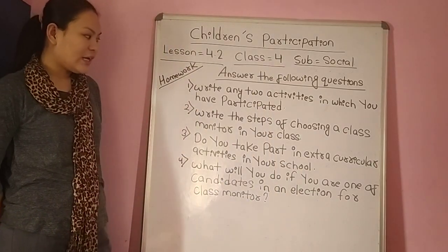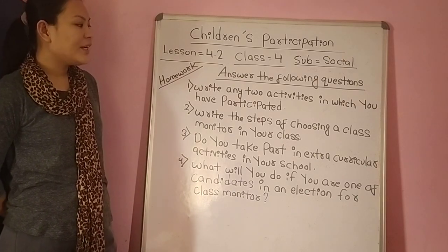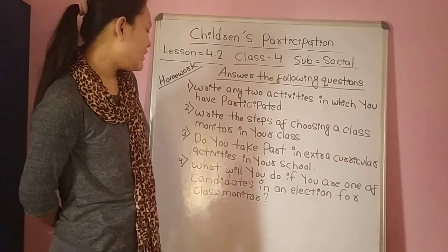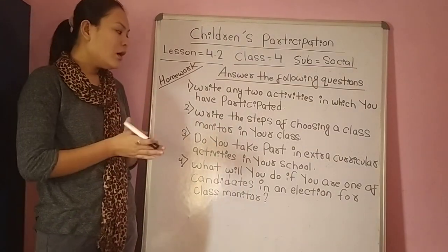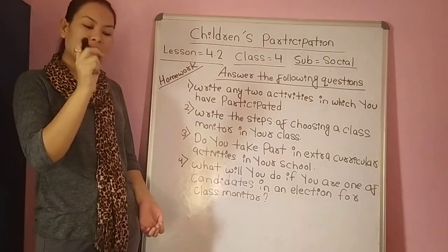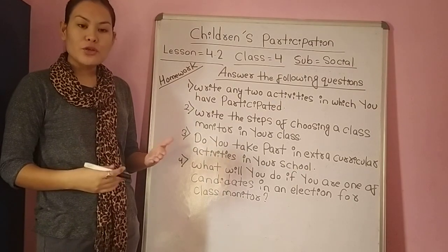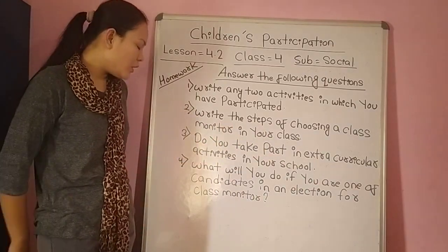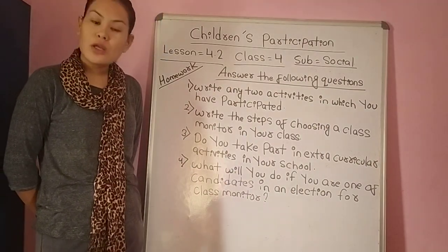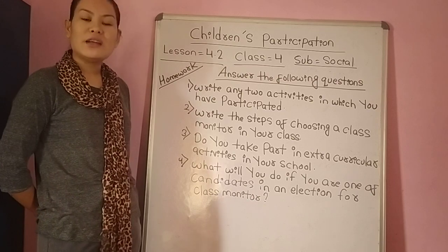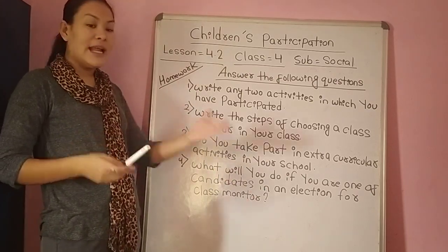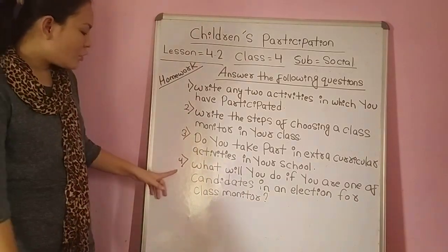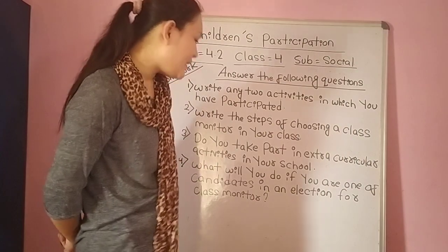Here are some word question answers related to lesson 4.2 of class 4. For homework, question number one: write any two activities in which you have participated. Question number two: write the steps of choosing a class monitor in your class. Question number three: do you take part in extracurricular activities held in your school? Write yes or no.